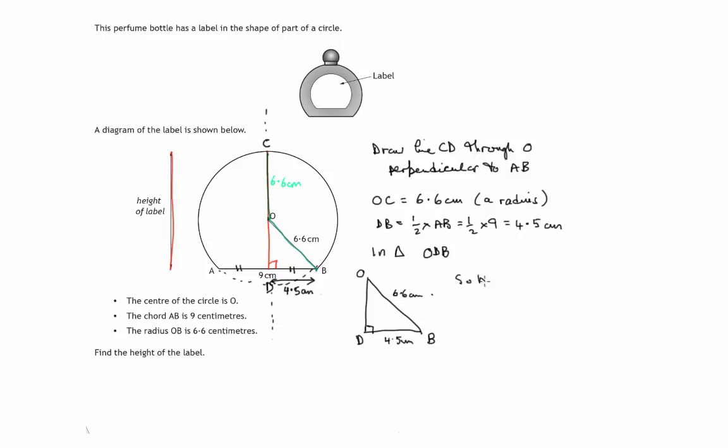So by Pythagoras's theorem, OD squared. Now that's a shorter side. The hypotenuse is OB. OD will be OB squared minus DB squared. That's 6.6 squared minus 4.5 squared. So OD will be the square root of whatever that comes to.